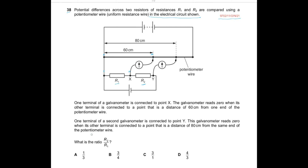The other terminal — one terminal of the second galvanometer — is connected to point Y. This galvanometer reads zero when its other terminal is connected to a point at a distance of 80 centimeters from the potentiometer. So at this balance point, the PD here equals the PD here at that time.